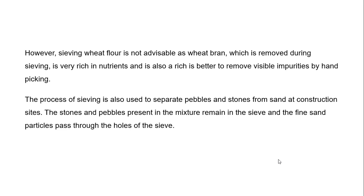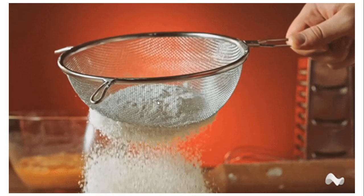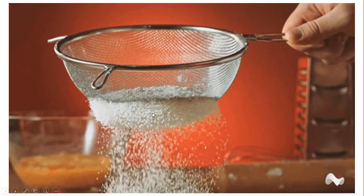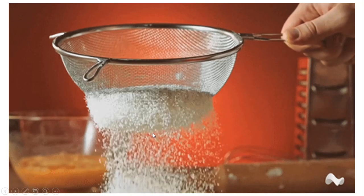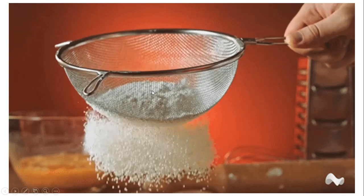The process of sieving is also used to separate pebbles and stones from sand at construction sites. The pebbles and stones present in the mixture remain in the sieve, and as the sand is fine, it will pass through the holes of the sieve. Here you can see: through the holes, the small particles pass out and the larger particles remain inside the sieve.